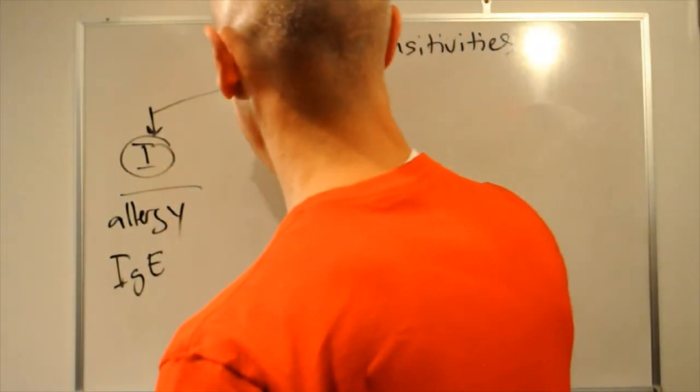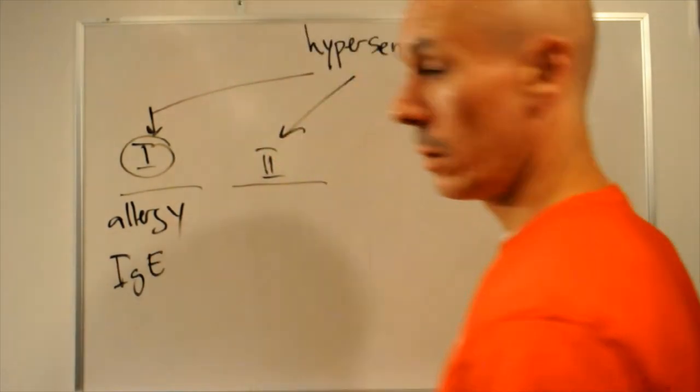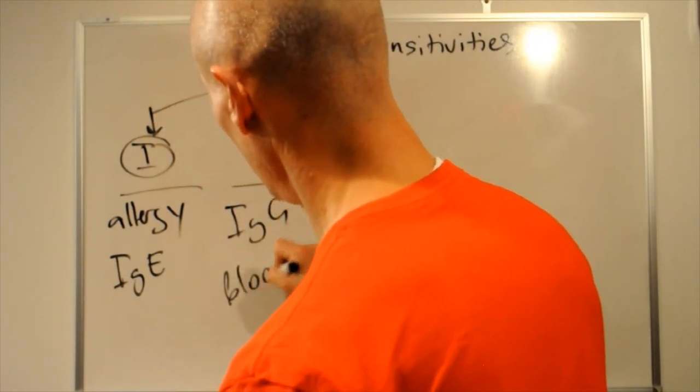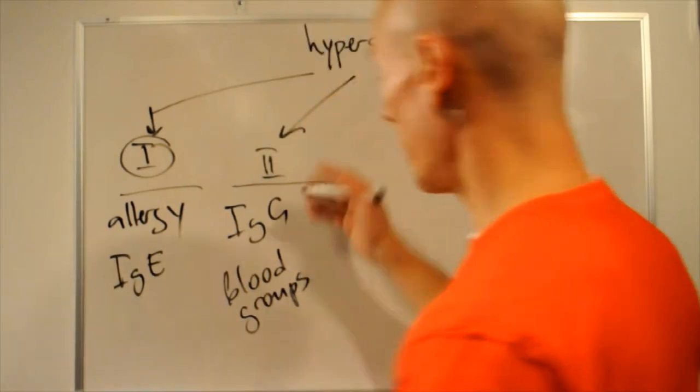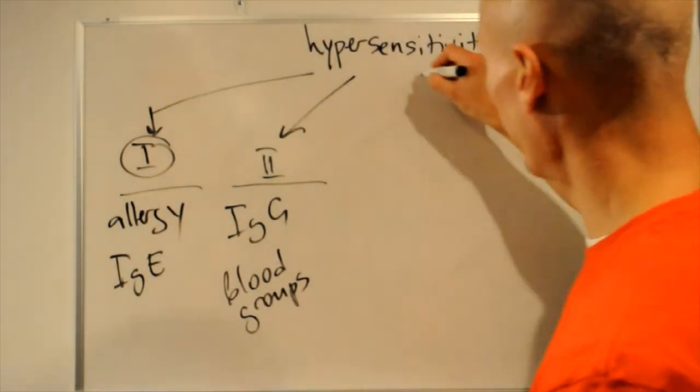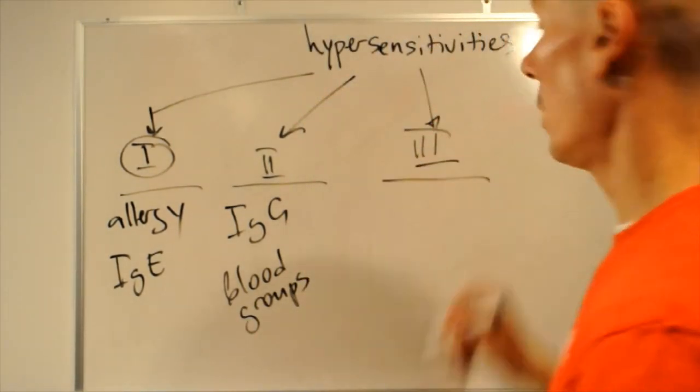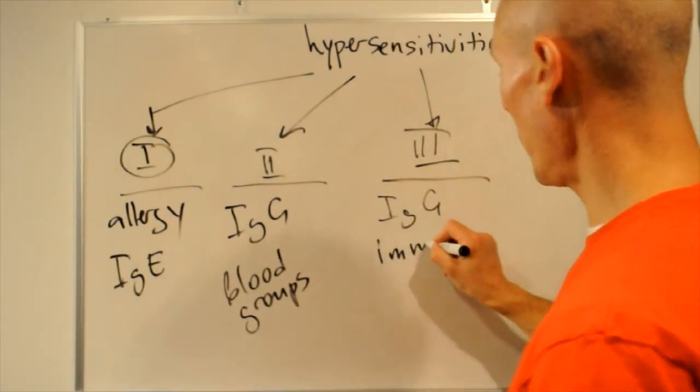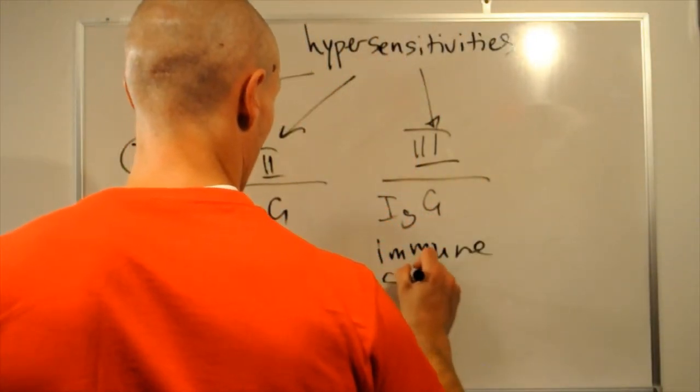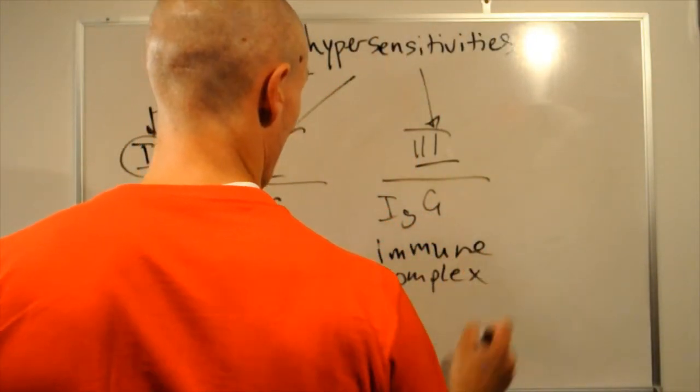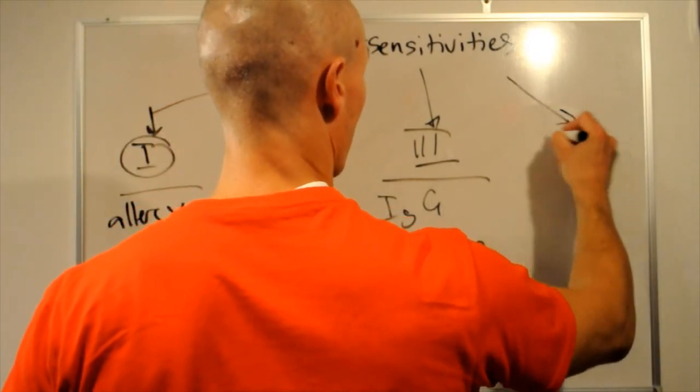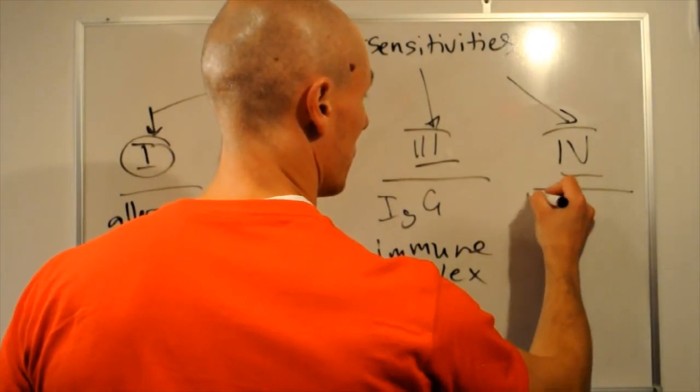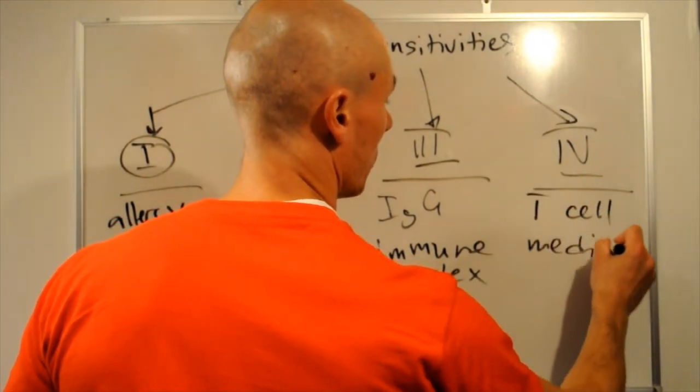Type 2, this is mediated by immunoglobulins. That's blood groups, consequences of improper blood transfusion. Type 3, also mediated by IgG, that's immune complex formation. And we have type 4, which is T-cell mediated.